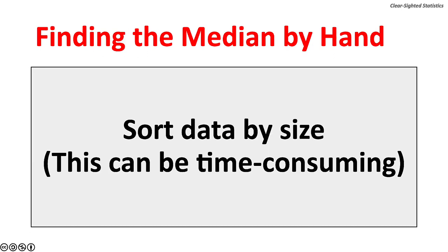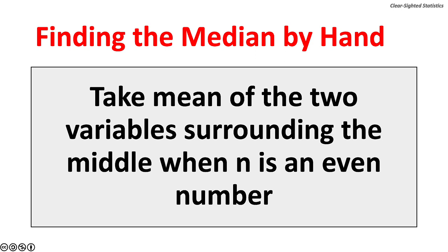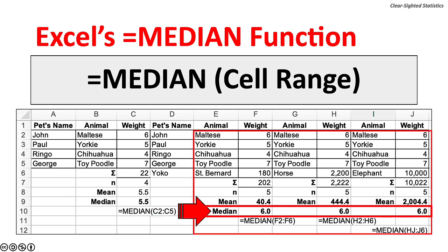Finding the median by hand: sort the data by size, find the middle variable when N is odd, or take the mean of the two variables surrounding the middle when N is even. Excel's MEDIAN function is much faster because sorting the data is unnecessary. The mean and median weights for the four lapdogs is 5.5 pounds. Whether Yoko is a 180-pound St. Bernard, a 2,200-pound horse, or a 10,000-pound elephant, the median remains 6 pounds. In fact, Yoko could have the mass of an entire galaxy — the median would still be 6 pounds.